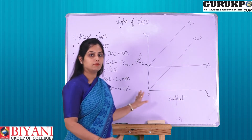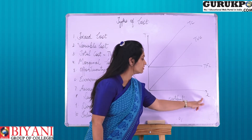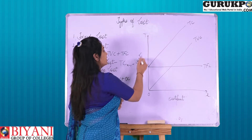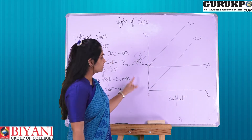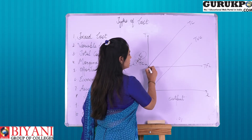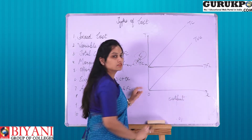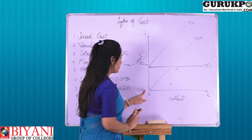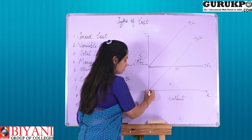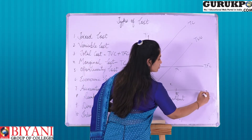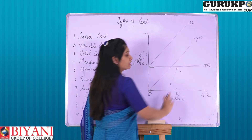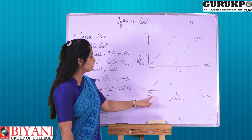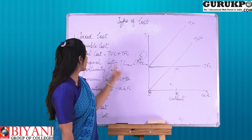Now here is the relationship between TC, TVC, and TFC. This is a very important and basic concept. On the x-axis we have output; on the y-axis we have cost. As the diagram shows, TFC is parallel to the x-axis — it is constant. Whether production is 0, 5, or 10, the fixed cost will remain the same, that is why it is parallel to the x-axis.